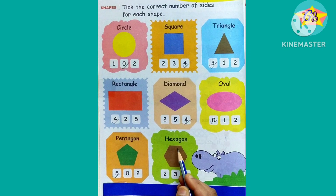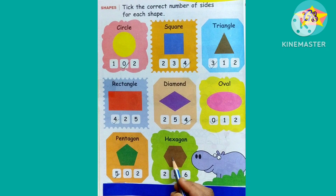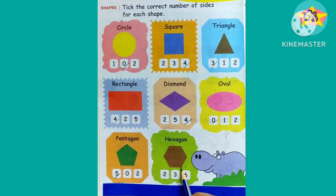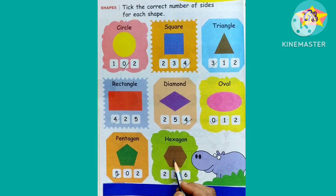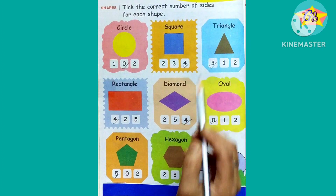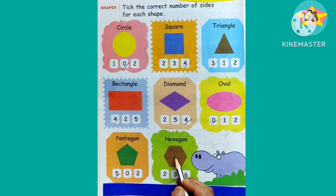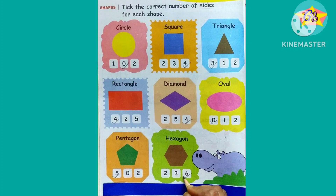The next shape is a hexagon. In Hindi it is called 'shataбхuj,' meaning six. We have to count sides: one, two, three, four, five, six. There are six sides in a hexagon. So we have to tick on the number six.